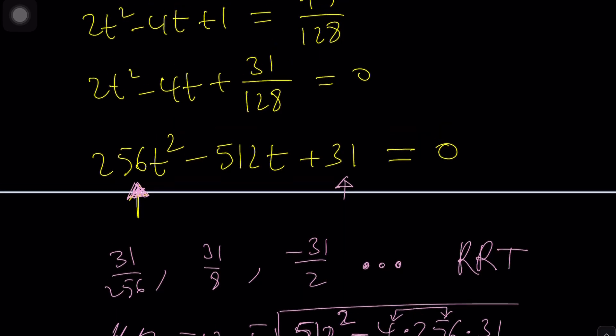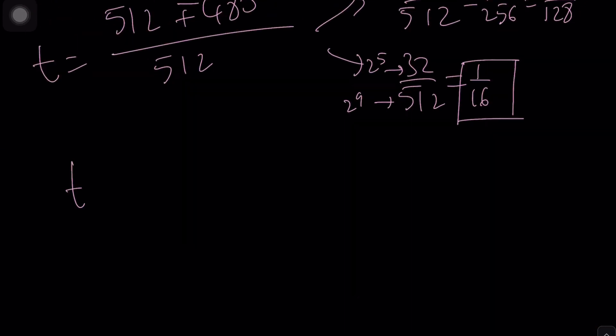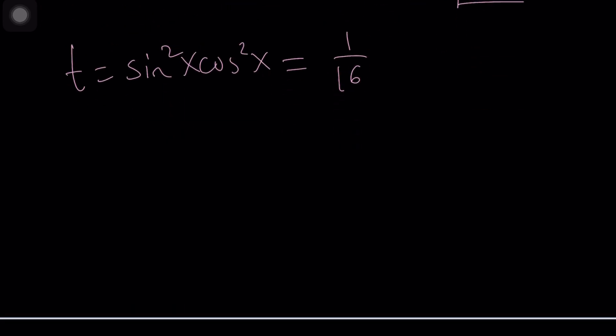What is t by the way? T is sine squared cosine squared. So t equals sine squared cosine squared. If you square root this at least one of the solutions is going to be this one and if you multiply both sides by 2 this is going to give you sine of 2x equals 1 half.